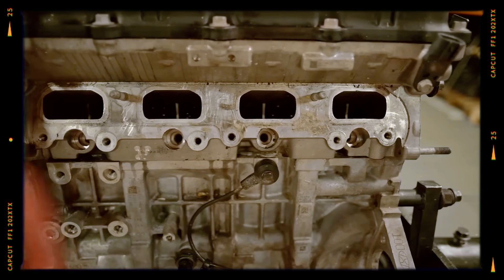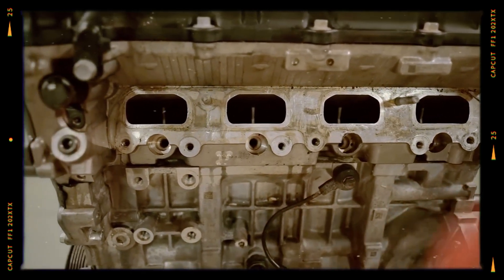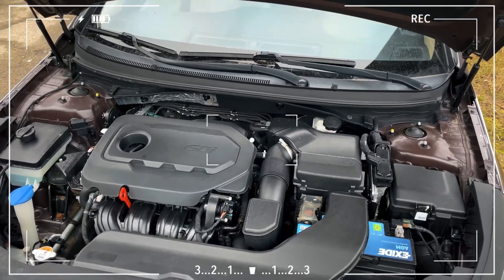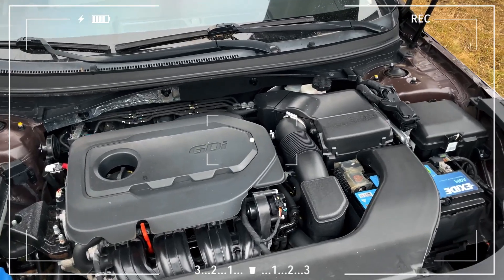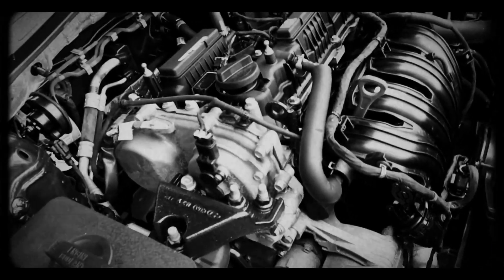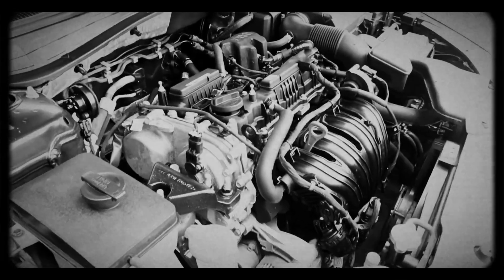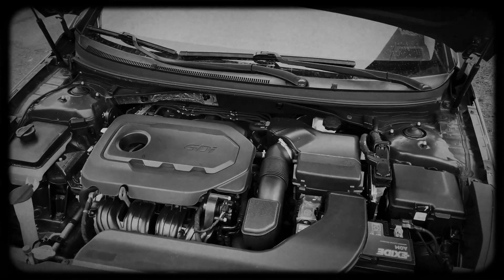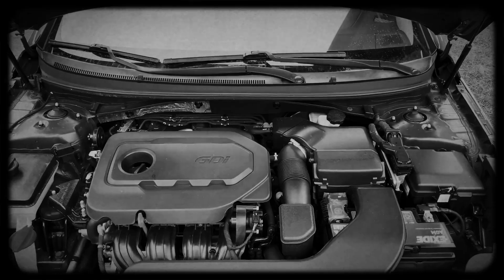Intake valve carbon on GDI units requires periodic blasting. Cheap exhaust manifold gaskets and AC compressor bearings fail prematurely. A wiring harness near the throttle body rubs through its loom causing intermittent misfire or sensor codes.